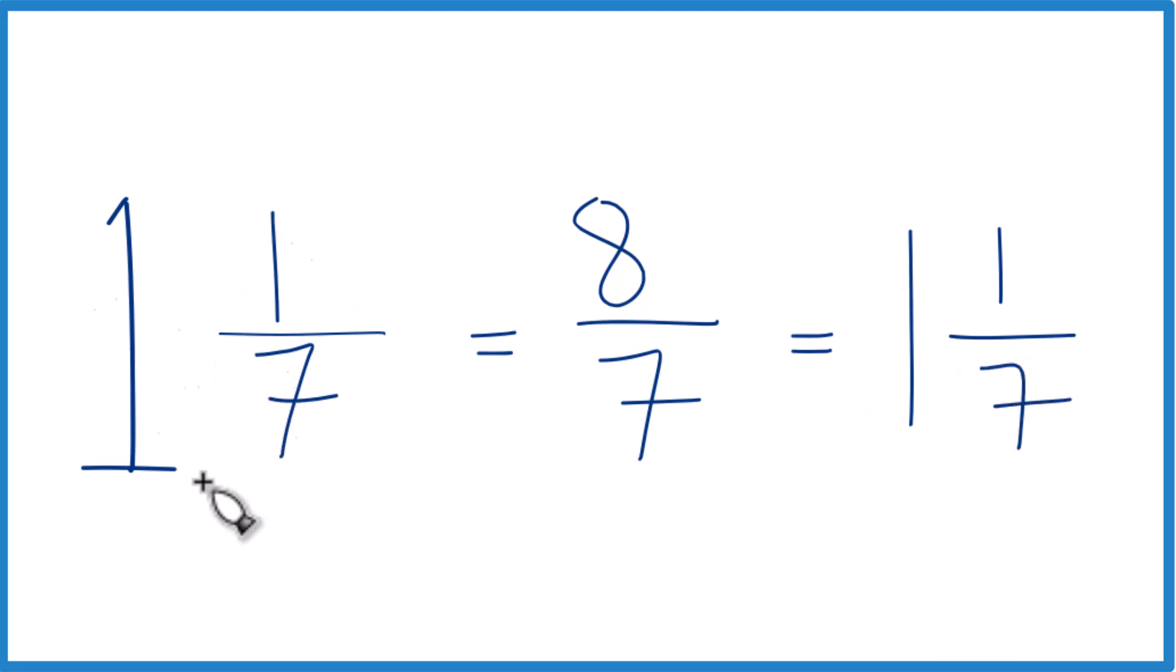That's what we started with, so we know we did it right. This is Dr. B, writing 1 and 1 7th. The mixed number here is an improper fraction. The answer is 8 7ths. Thanks for watching.